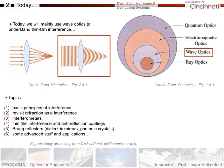We're going to look at interferometers. We'll talk about thin film interference and anti-reflection coatings on lenses. And we'll talk about Bragg reflectors, dielectric materials, and some advanced stuff and applications.